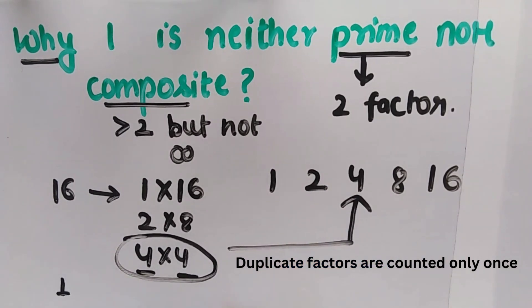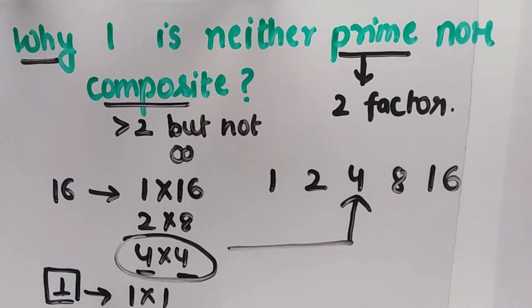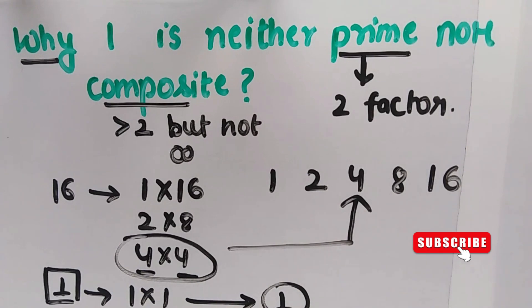Now if we want to do the factors for 1, it will be 1 times 1. The only way to get a product of 1 is if we multiply 1 by 1. So if we see that 1 and 1, we will count it only once. So only one factor of 1 is there.